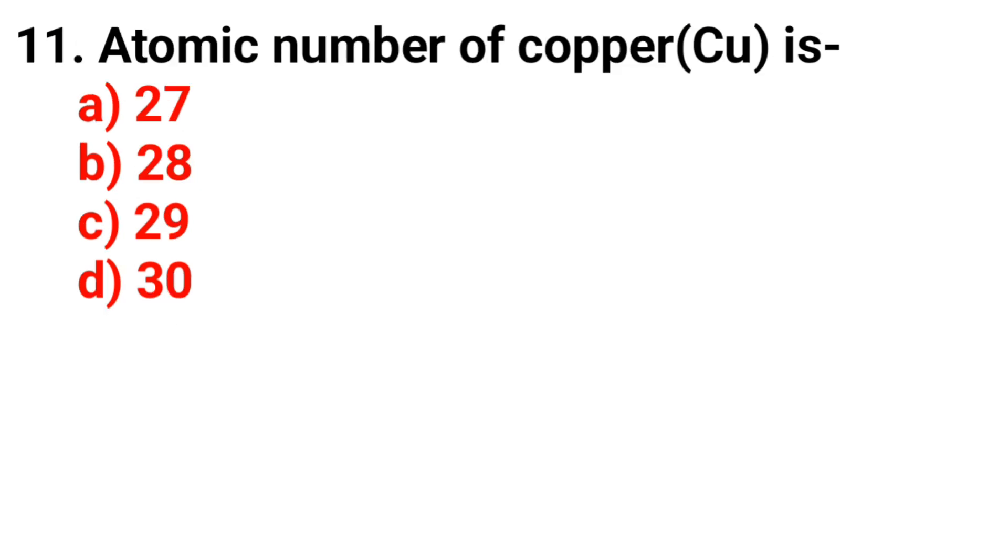Question 11. Atomic number of copper is. The answer is Option C, 29.